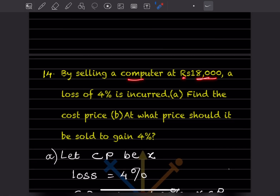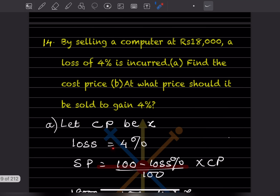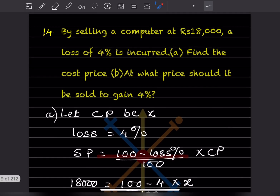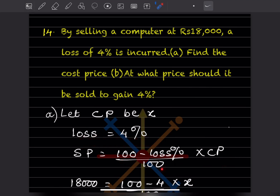Question 14: By selling a computer for ₹18,000, a loss of 4% is incurred. Find the cost price. Also find at what price it should be sold to gain 4%. The selling price is ₹18,000 and the loss percentage is 4%, so we use the formula: SP = (100 − loss%) ÷ 100 × CP.